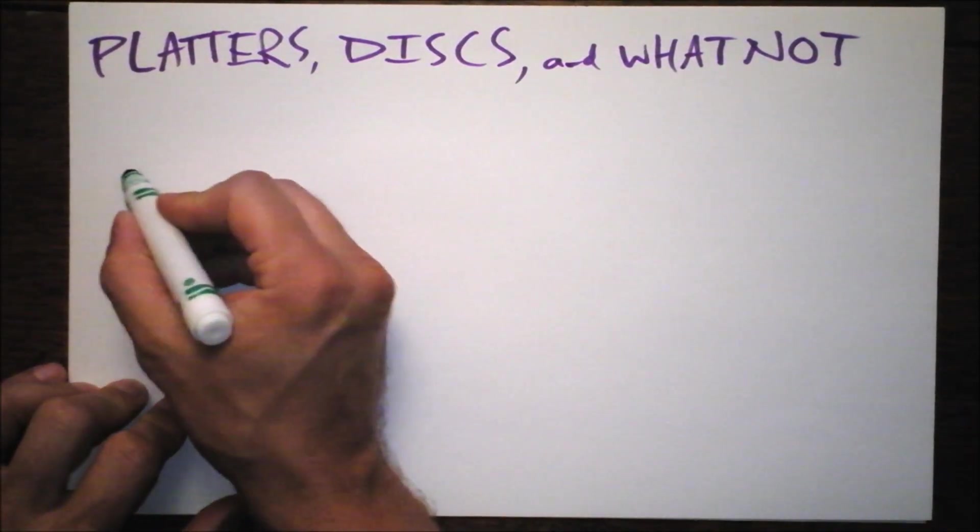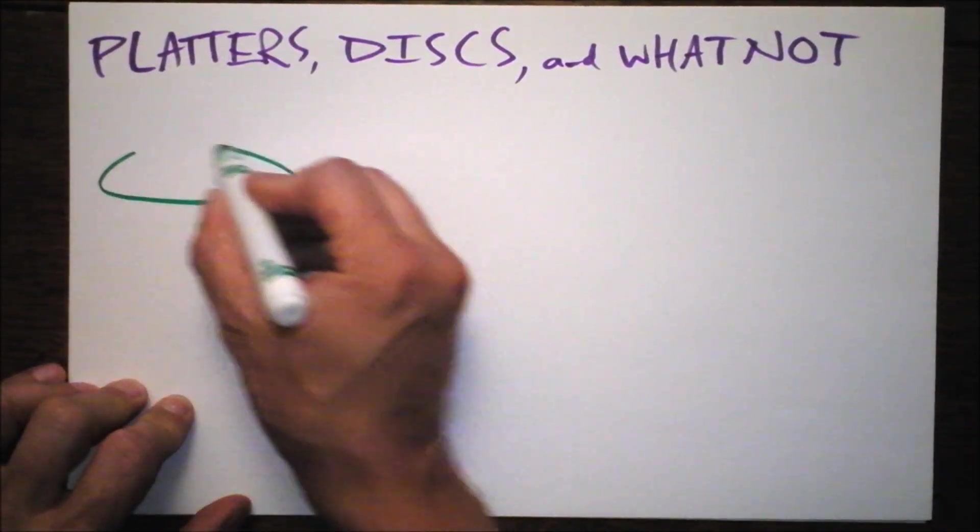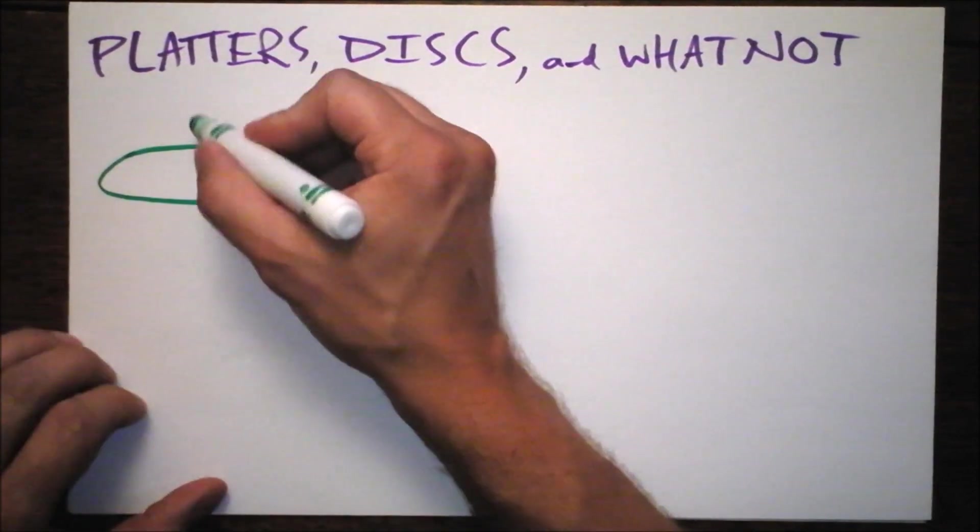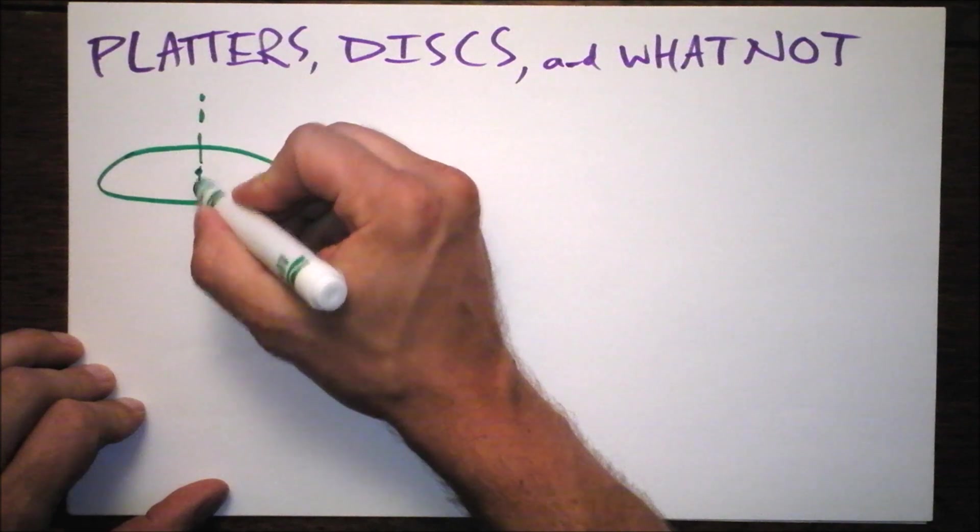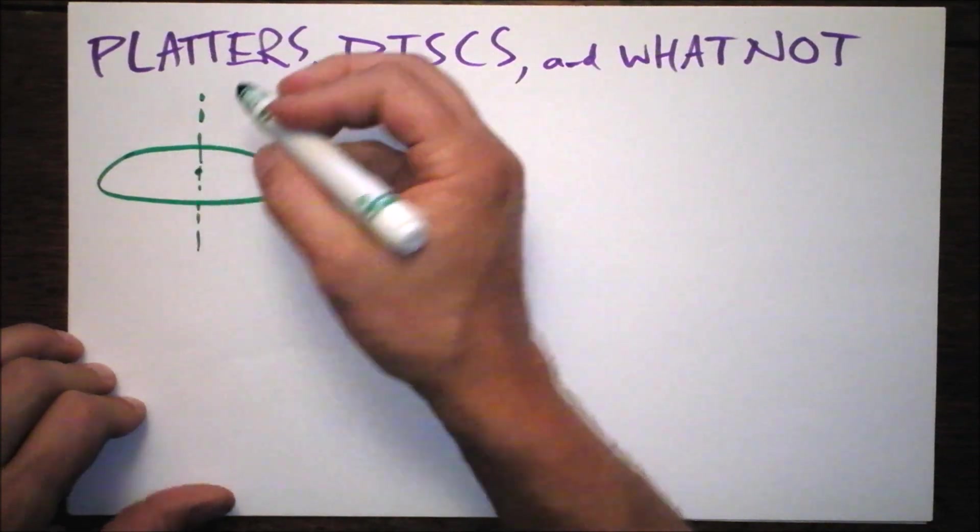So here we have a disc and it's infinitely thin so we don't have to worry about any of that. And of course we're going to have the axis go right through the center. And then it could come out that side.